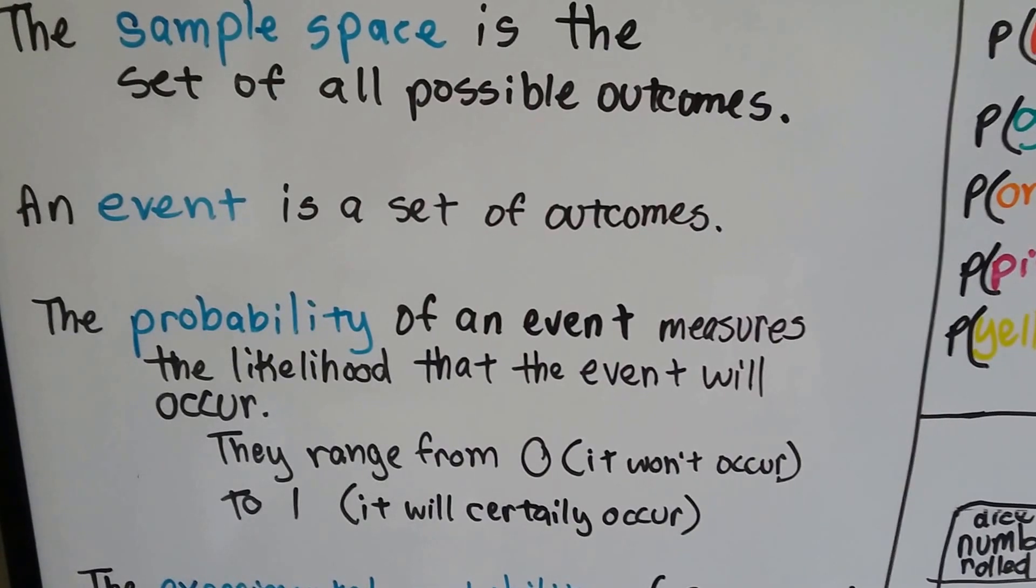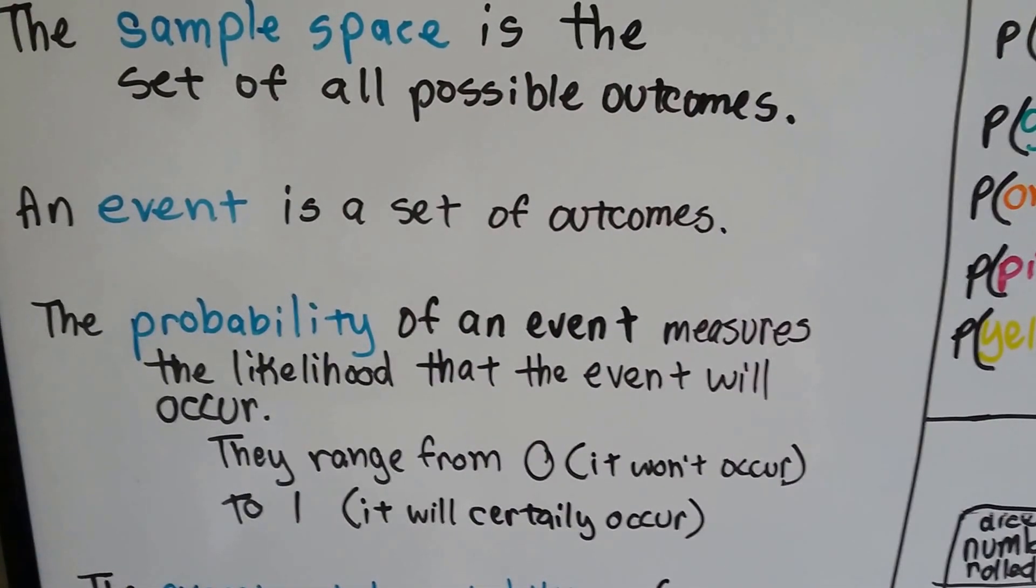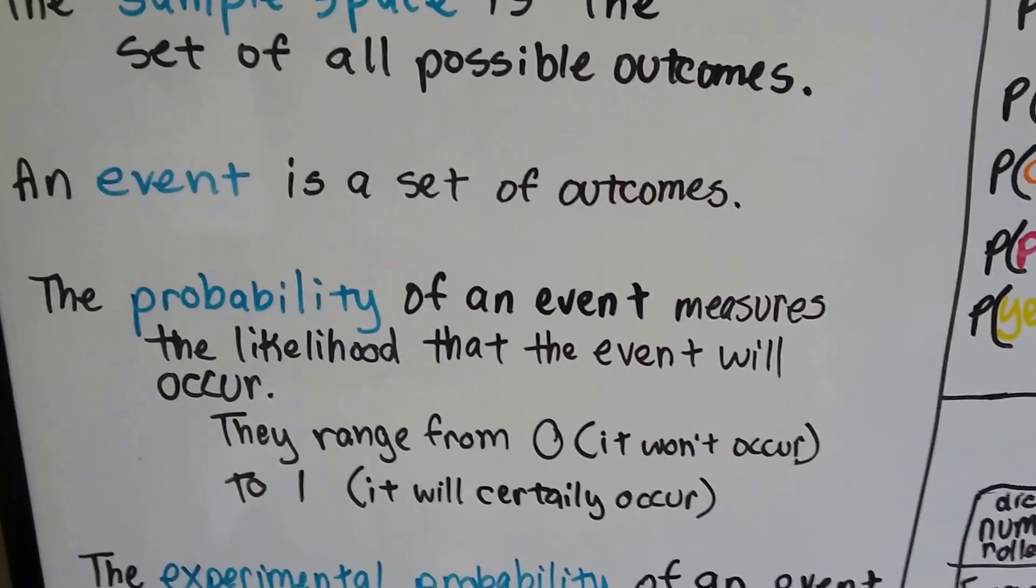0 is none, impossible, and 1 means it did occur 100% of the chance it's going to happen.